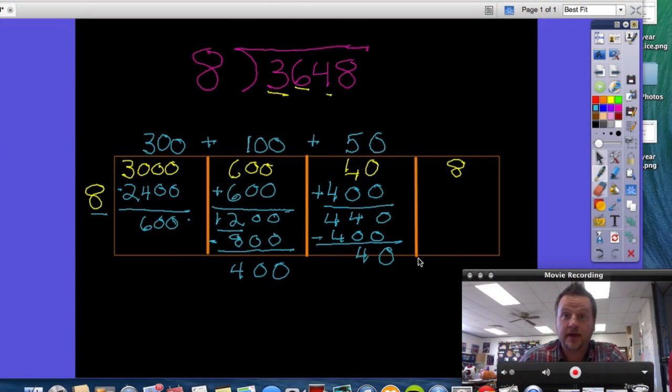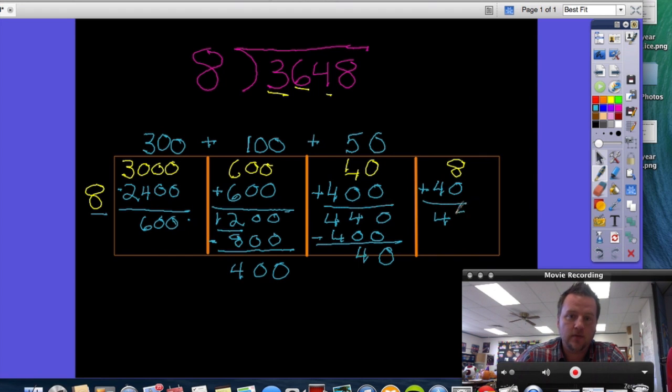So our last step is to look at the ones place. I have eight ones, but I also have 40 left over from the tens place. So what I need to do is I need to add that 40 to my eight ones, and that's going to give me 48 ones. I need to look back and check with my divisor. 48, students should be able to see a basic fact there that 8 times 6 is going to give them 48. So I guess it would make more sense to put 6 up here because 6 times 8 is 48. Here is 48. I have nothing left over.